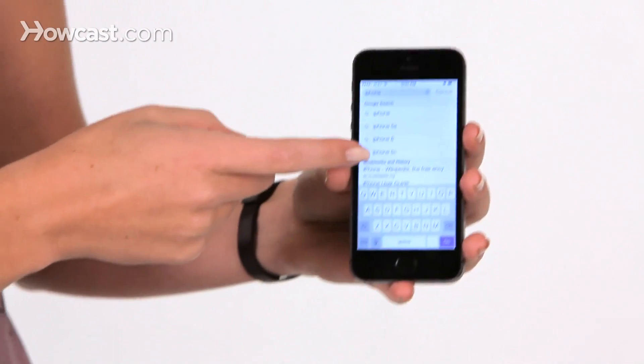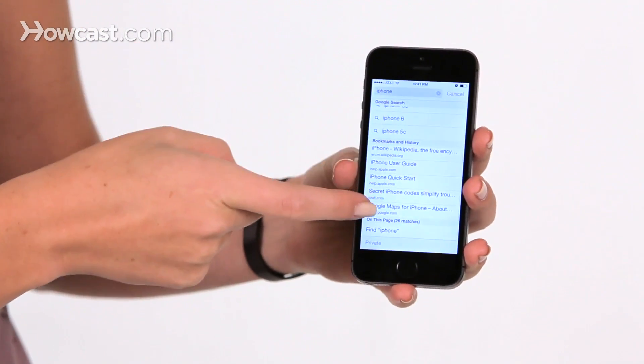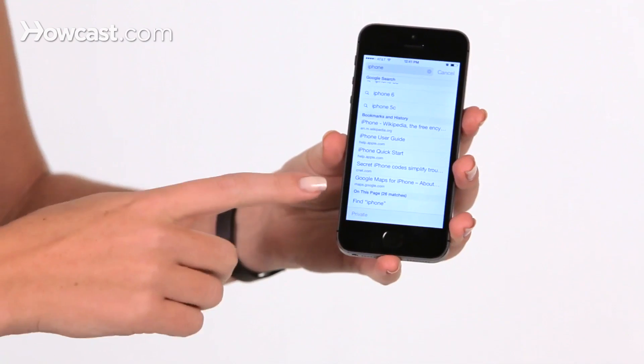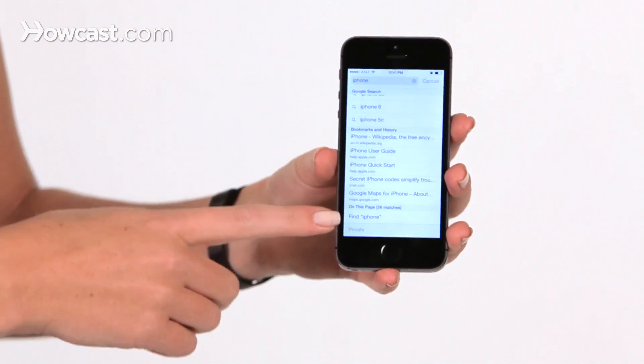Now when you scroll down, first you see your Google search options. You see bookmarks and history that you have with that word, and at the very bottom you have on this page, and you can say find iPhone.